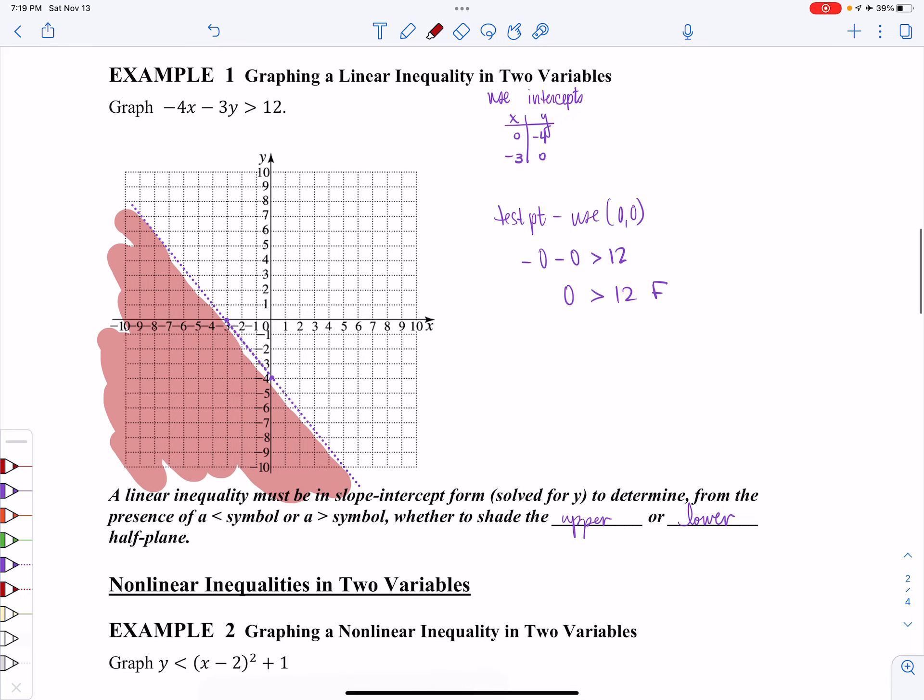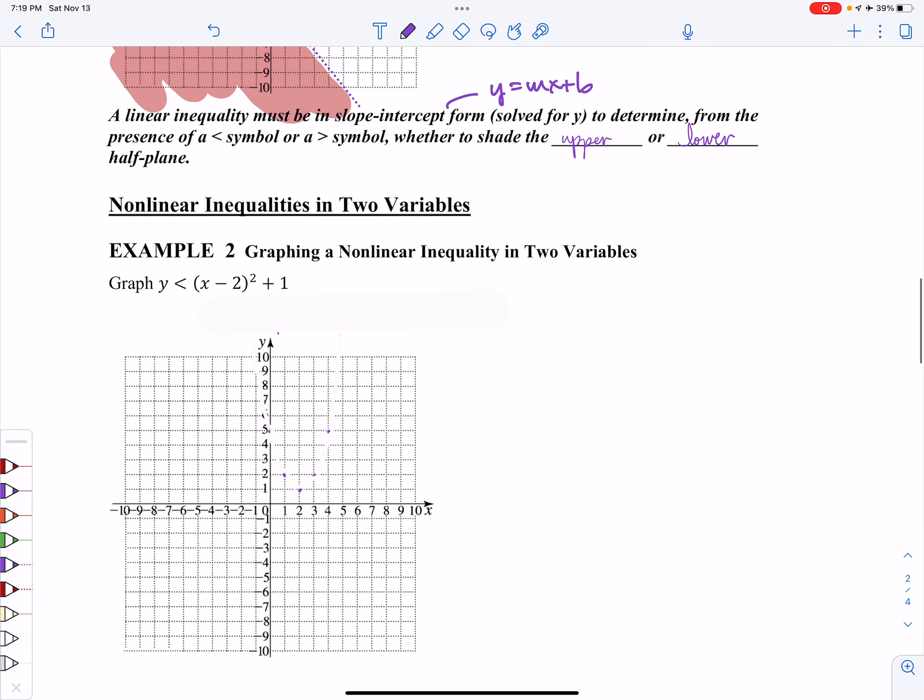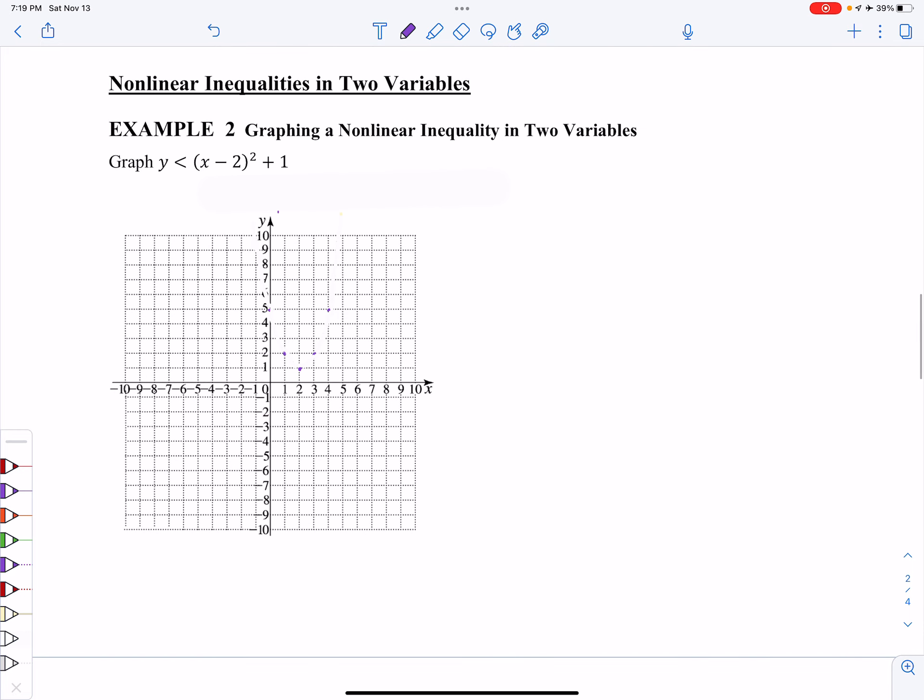A linear inequality must be in slope-intercept form. Remember, that is y equals mx plus b. In other words, y needs to be isolated to determine whether to shade above or below or the upper or the lower part. So in this particular case, notice that my y is alone. So when I'm ready to start shading on this one, I can use the concepts from method number one.